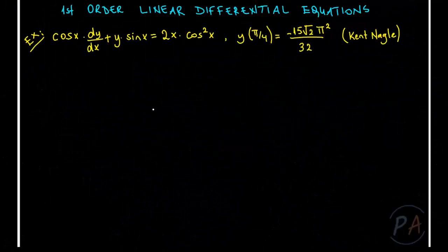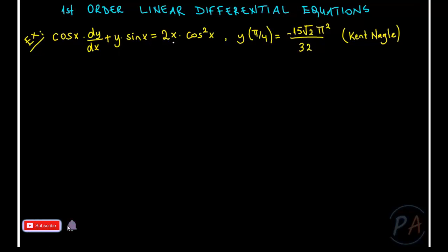Hello everyone, today we are again with you to solve an initial value problem based on a first order linear differential equation given as cosine(x) times dy/dx plus y times sine(x) equals 2x times cosine²(x), with initial data y(π/4) equals −15√2·π²/32. This initial value problem is also taken from Nagle's book.